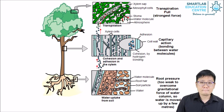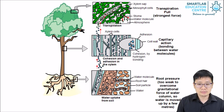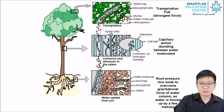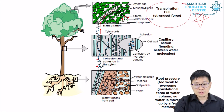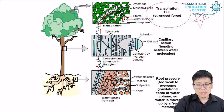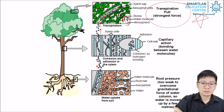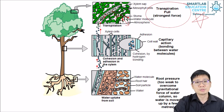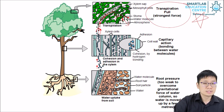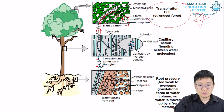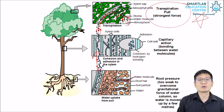In summary, transpiration is important for plants. Transpiration is caused by three different forces, of which transpiration pull is the strongest. As water vapour is lost through the stomata, more water is pulled out of the xylem by osmosis. This pulls the water column up the stem, all the way from the roots, and this helps the roots absorb more water.